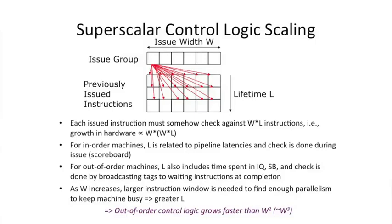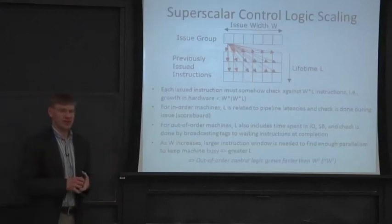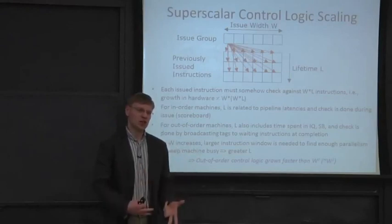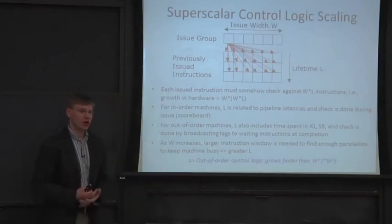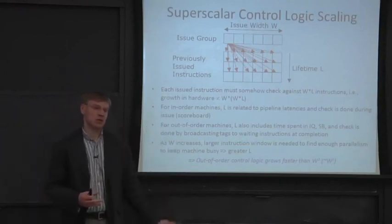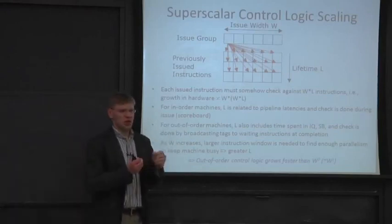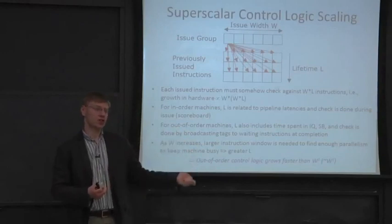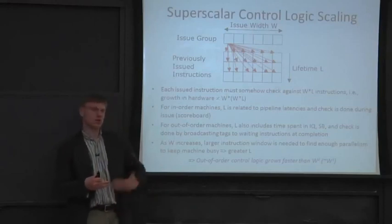Sometimes there are circuit-level tricks that can help. People who do full custom logic for processor designs build something called pickers. A picker is a custom analog circuit — almost like a CAM, or content-addressable memory, but not quite — which chooses which instruction is ready to execute. Typically you want a heuristic that selects the oldest instruction to prevent deadlocks and ensure forward progress in the machine.